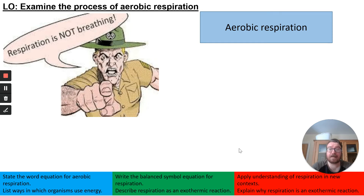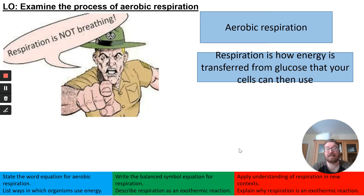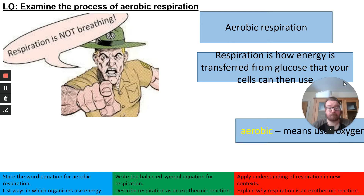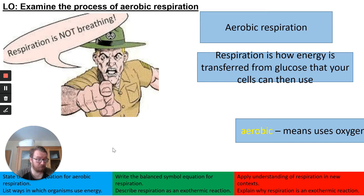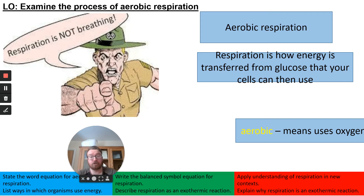On to the lesson. We're looking at aerobic respiration. Respiration should not be confused with breathing. Respiration is a process that happens in the mitochondria of your cells to release energy. Aerobic means uses oxygen. That 'aer' means kind of oxygen — you used to have aeronauts, which were like hot air balloon pilots, so they fly through the air. The chocolate Aero contains bubbles of air. That 'aer' means oxygen. So aerobic uses oxygen.